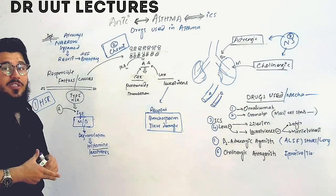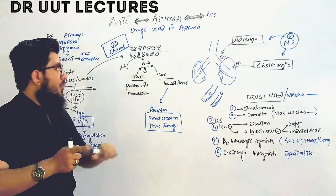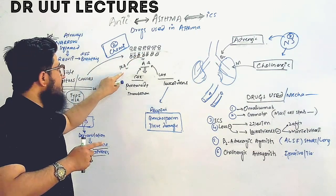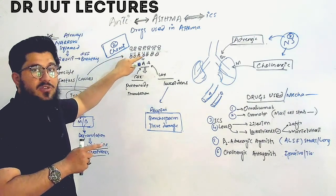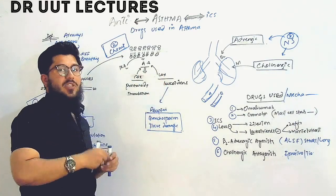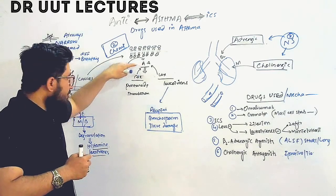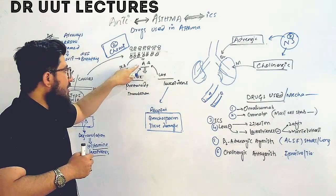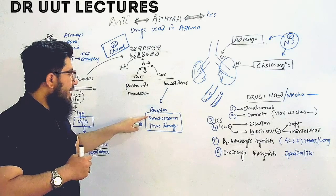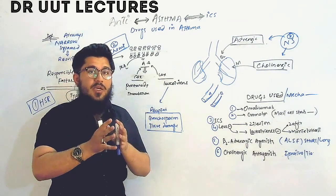The second factor involves chemical mediators through the arachidonic acid pathway. Our cell membrane is made up of phospholipids. The enzyme phospholipase A2 targets these phospholipids and converts them into arachidonic acid, which is a substrate for the COX enzyme and LOX (lipoxygenase) enzyme. The LOX pathway interacts with arachidonic acid to produce leukotrienes, which bind to receptors on the bronchioles and cause bronchospasm.